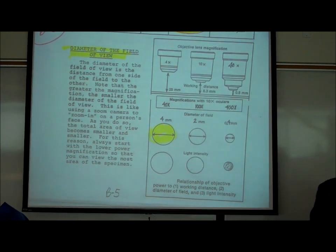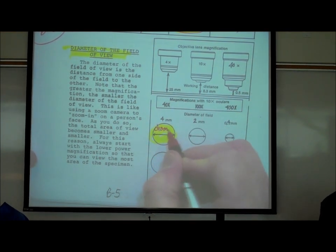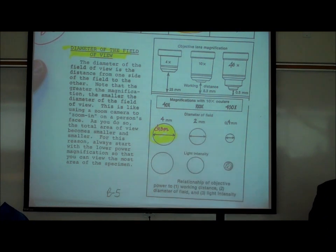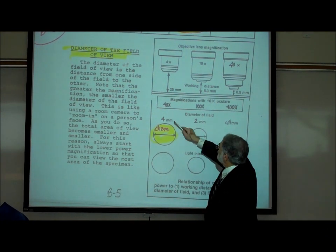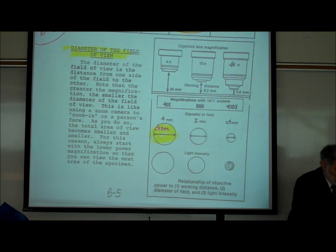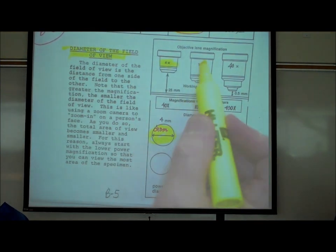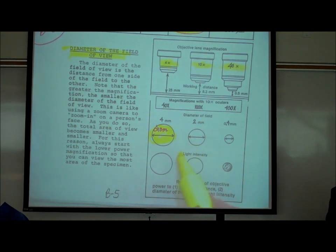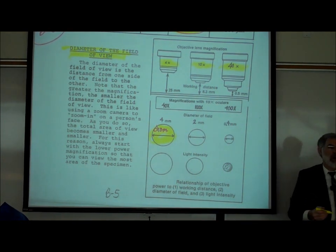That's called the diameter. As you increase the magnification — going from scanning to low power to high power — you'll notice that the diameter of the field of view gets smaller and smaller.